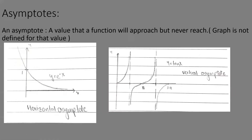An asymptote is a value that a function approaches but never reaches — the graph is not defined for that value. There are two types: horizontal and vertical. For example, y equals negative e to the x will never reach y equals zero but approaches it. Similarly, y equals tangent x approaches infinity near pi over two but never reaches it.